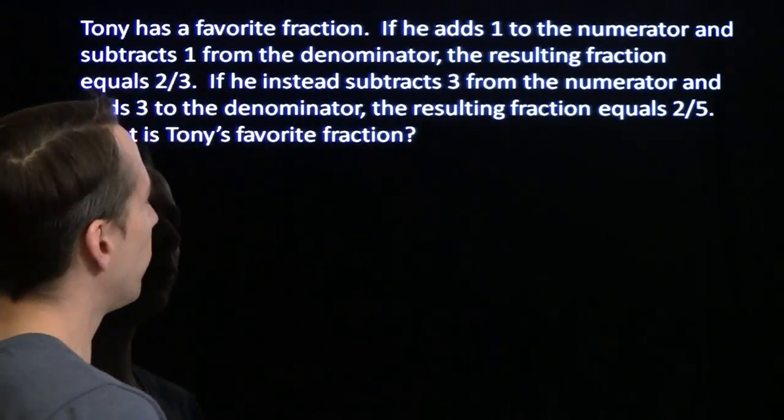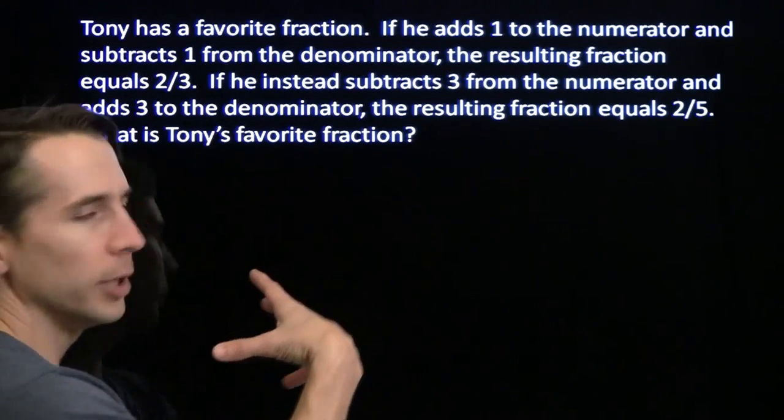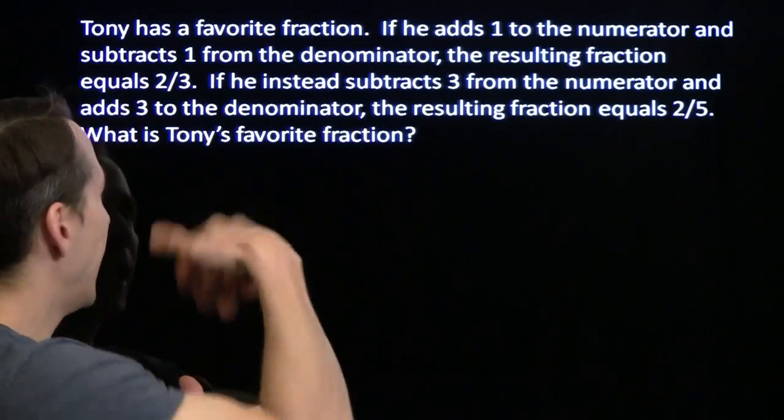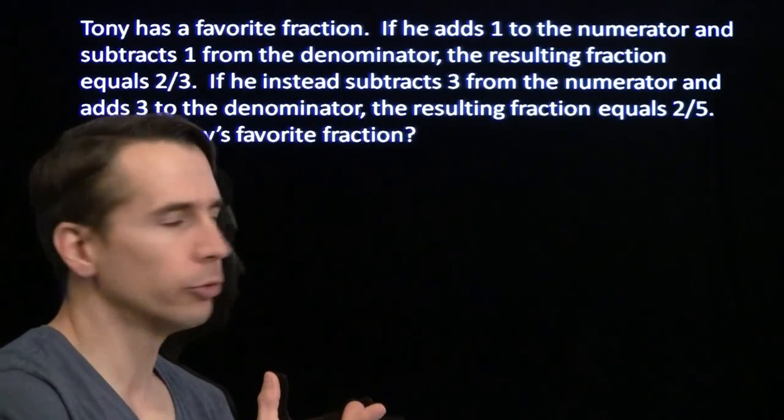He adds 1 to the numerator, subtracts 1 from the denominator, he gets something that equals 2 thirds. Instead, he subtracts 3 from the numerator, adds 3 to the denominator, he gets something that equals 2 fifths.